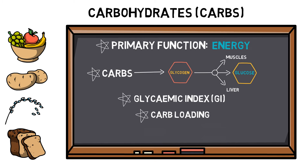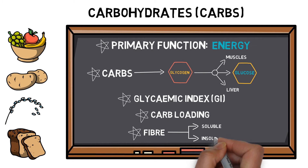Carb loading is a term used to describe an increase in carbohydrate intake prior to an activity, such as running a marathon or a long-distance cycle race. Fibre is an indigestible carbohydrate that comes in the form of soluble and insoluble fibre. Soluble fibre dissolves into a gel that slows down how quickly the stomach empties and binds to blood cholesterol, reducing heart disease. Insoluble fibre does not dissolve and helps keep the digestive system clean and helps make you feel full for longer.